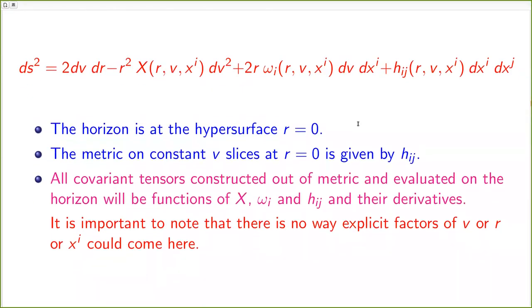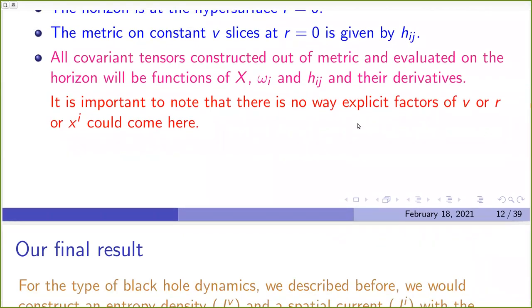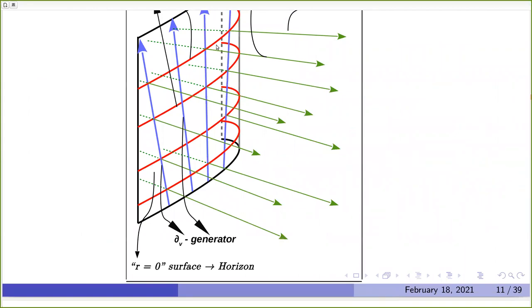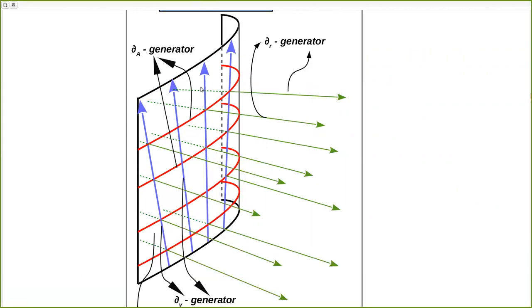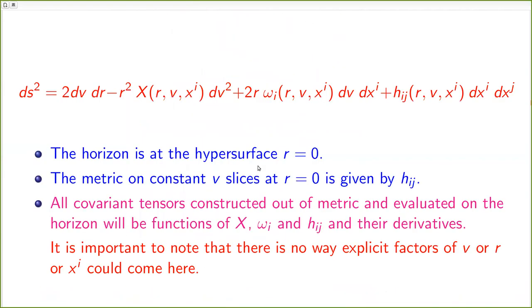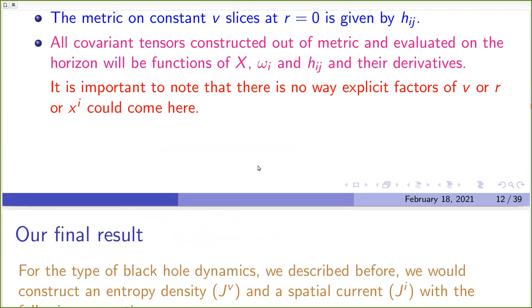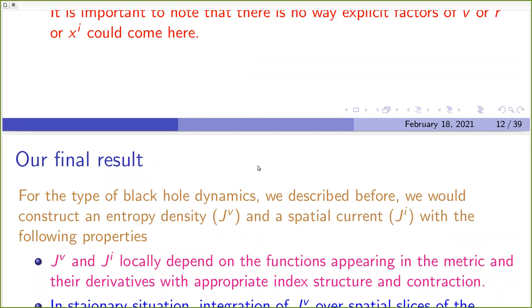The v direction — the null direction — is our 'time' along the horizon. Whenever I said that area or Wald entropy should be increasing in time, I meant evolution along the v direction (the blue ∂_v direction). Now the final result: we started to fix a problem in Wall's construction — his entropy function was positive definite but it wasn't clearly reducing to the appropriate equilibrium entropy satisfying the first law. What we found was something more surprising.